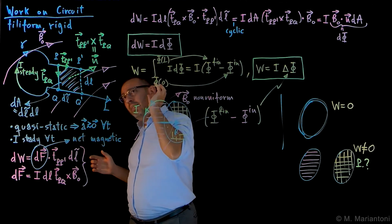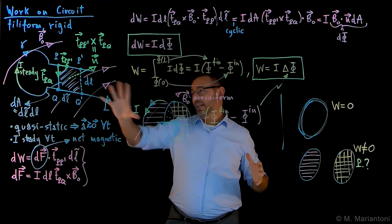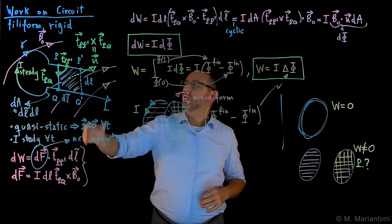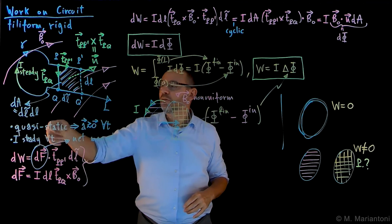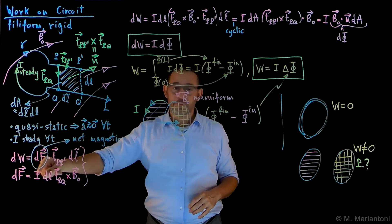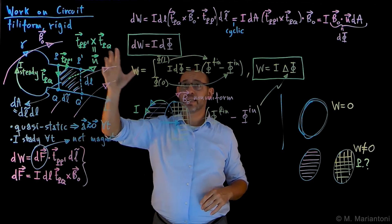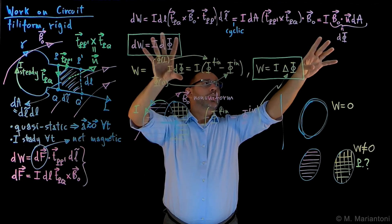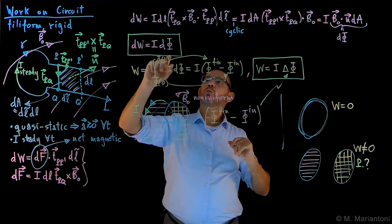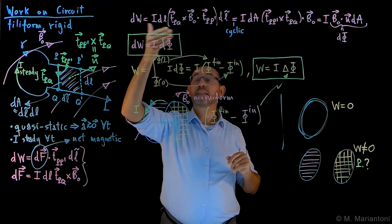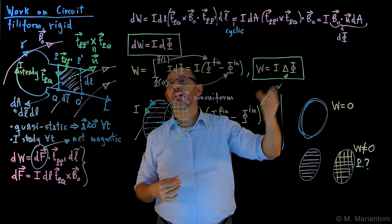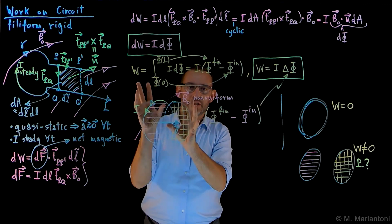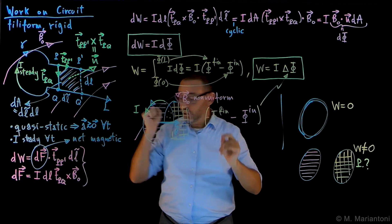To summarize this video on Work on Circuit: a filiform rigid circuit with a movable part carrying a steady current, under a quasi-static transformation, has work of internal forces dW = I · dΦ, generalizing to W = I · ΔΦ. We used the cyclic property of the triple product to derive this key result, and extended it to any rigid circuit shape. I've also posed a couple of discussion questions for you to answer in Piazza.